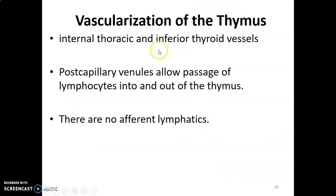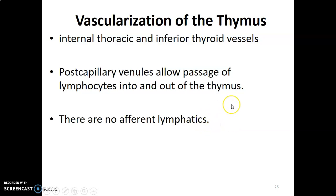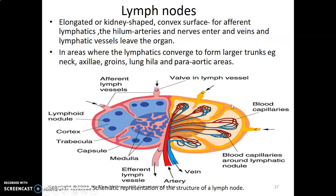The thymus is supplied by internal thoracic and inferior thyroid vessels from the subclavian artery. There are postcapillary venules that allow lymphocytes to pass in and out of the thymus, and there are no apparent lymphatics entering the thymus. In the next video, we will discuss the lymph nodes. Thank you.